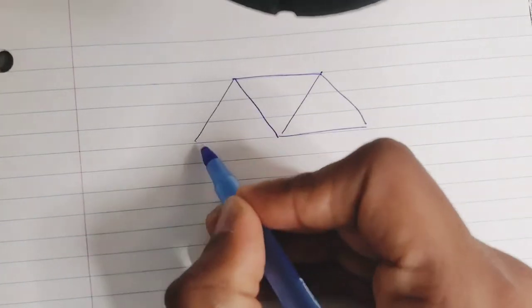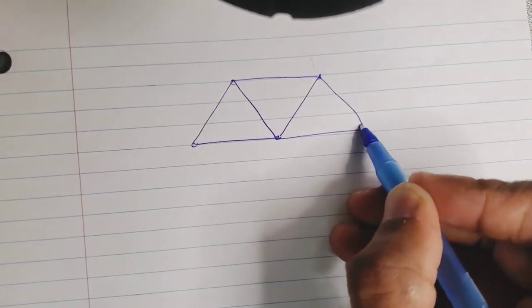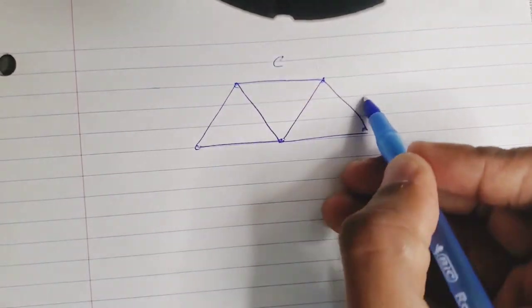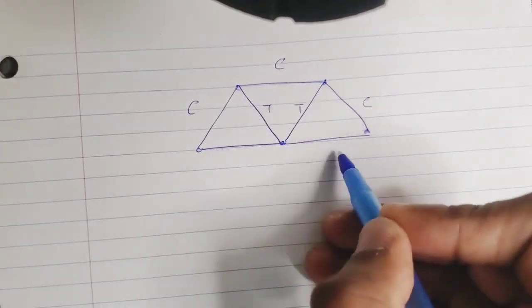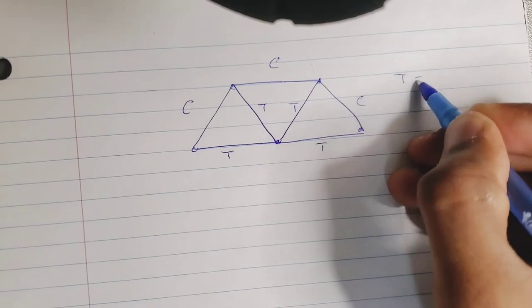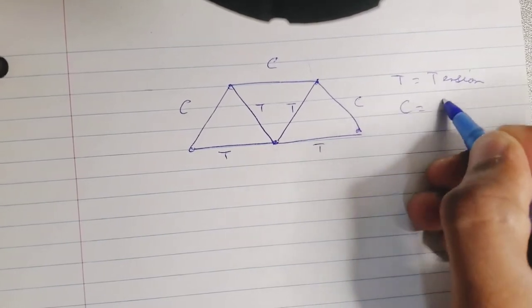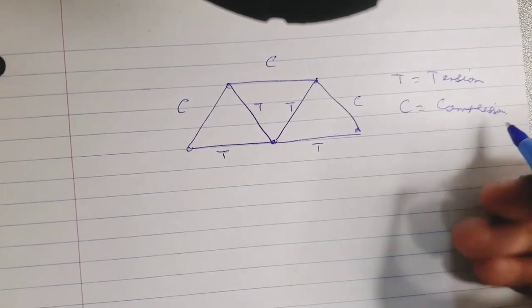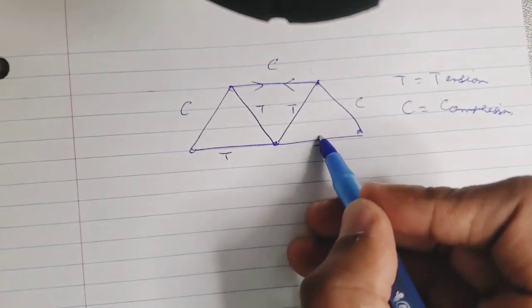Let's see how this works out. So the upper part of the truss structure faces compression forces, while the tension is exerted on hinges at the bridge stack. Thus the net force is equal to zero, which helps the bridge to stay in equilibrium.